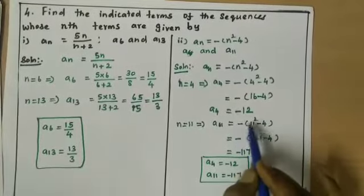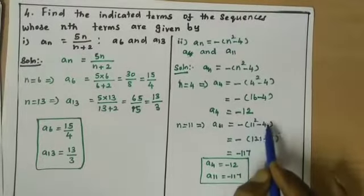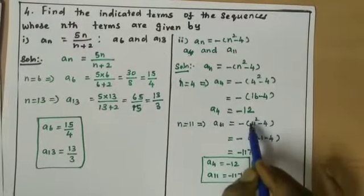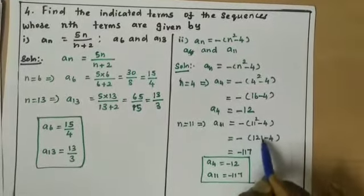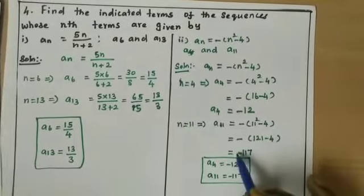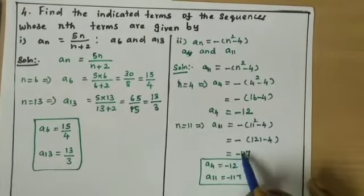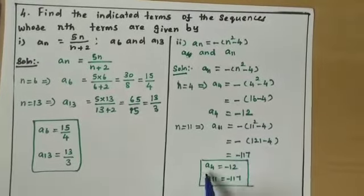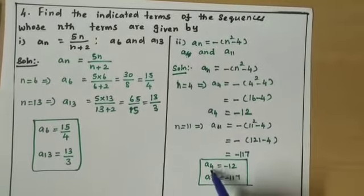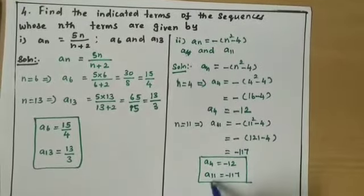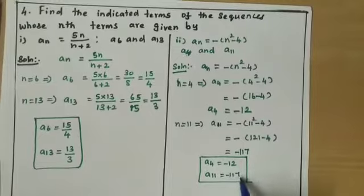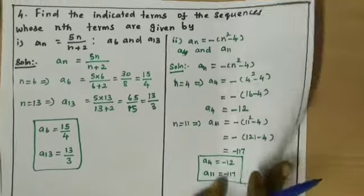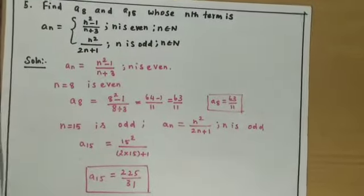For a11: a11 = -(11² - 4) = -(121 - 4) = -117. So a4 = -12 and a11 = -117.